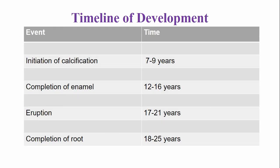The timeline of development of the maxillary third molar: calcification of this tooth begins at the age of seven to nine years, and the enamel is completed by the age of 12 to 16 years. This is the last permanent tooth that usually erupts — third molars erupt around the age of 17 to 21 years. The root is completed by the age of 18 to 25 years depending on the age of eruption, usually taking around two to three years after eruption.